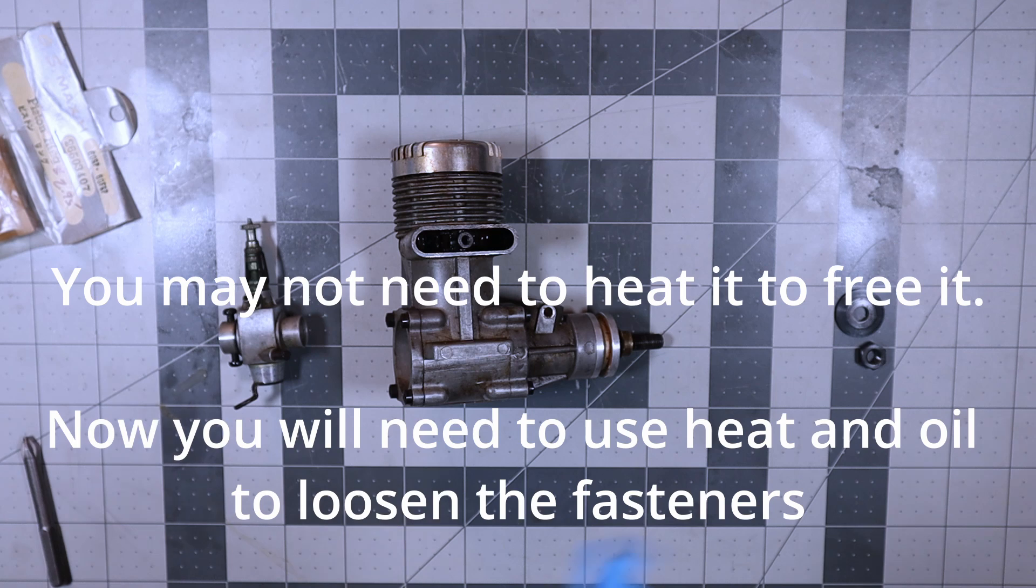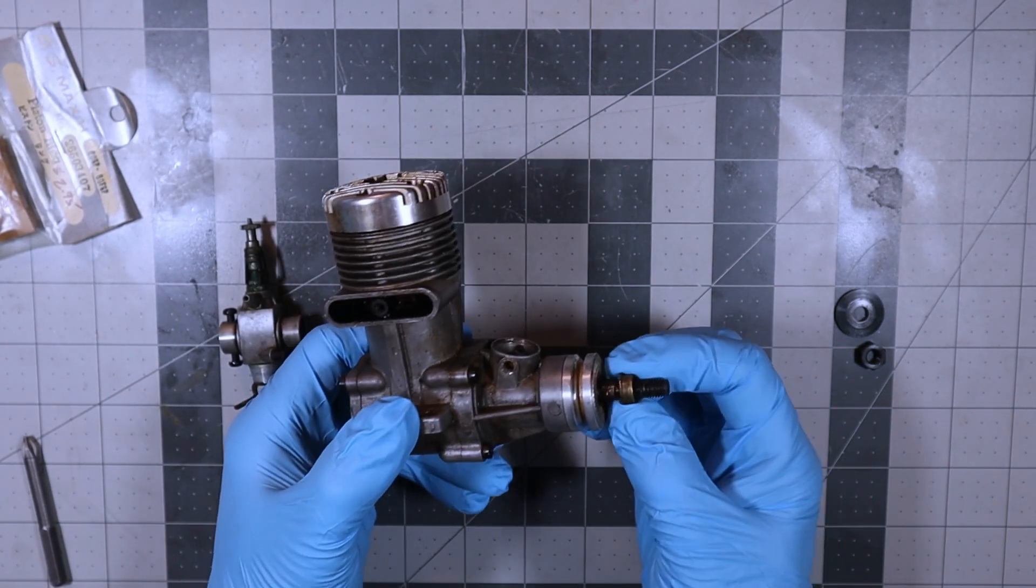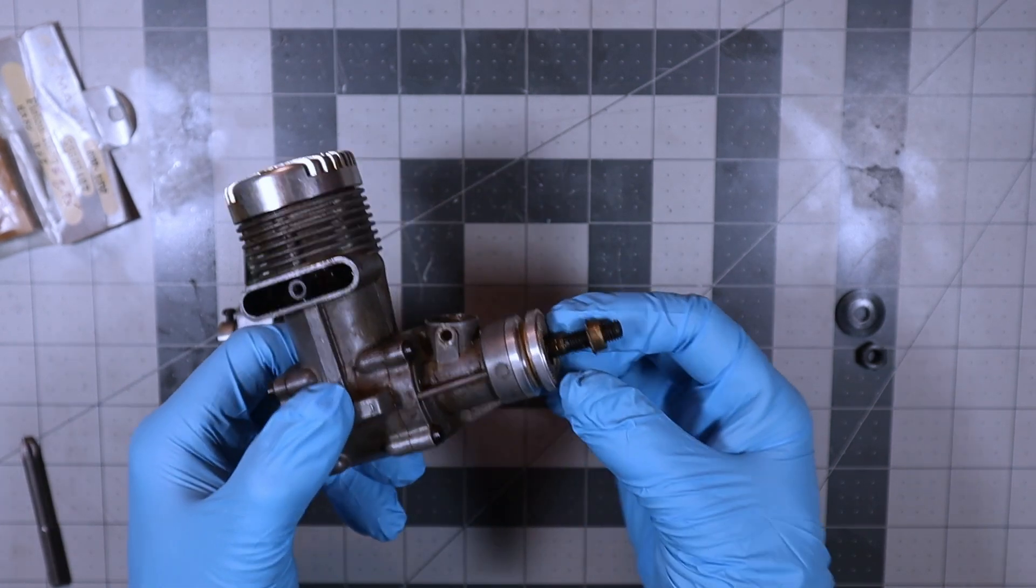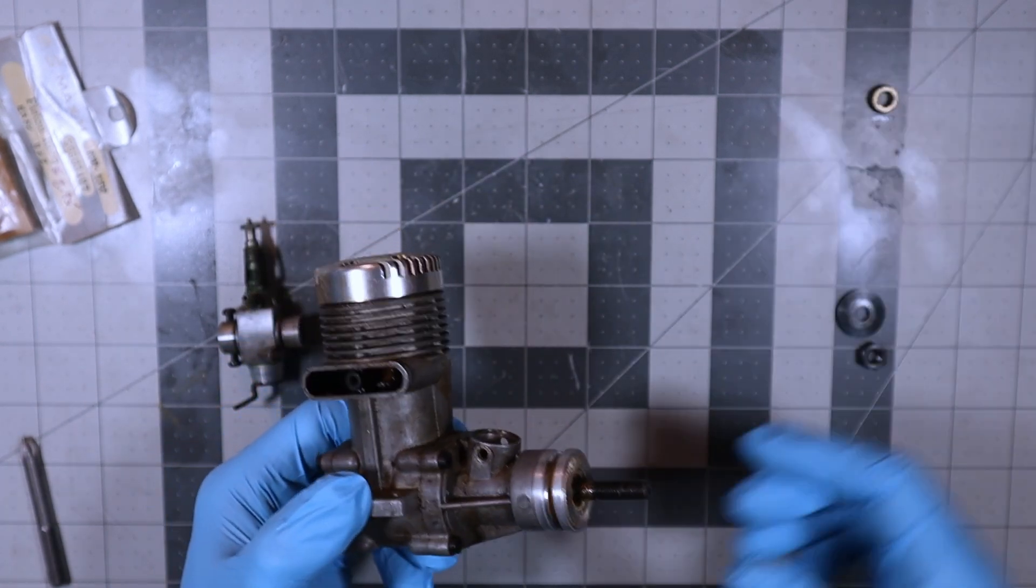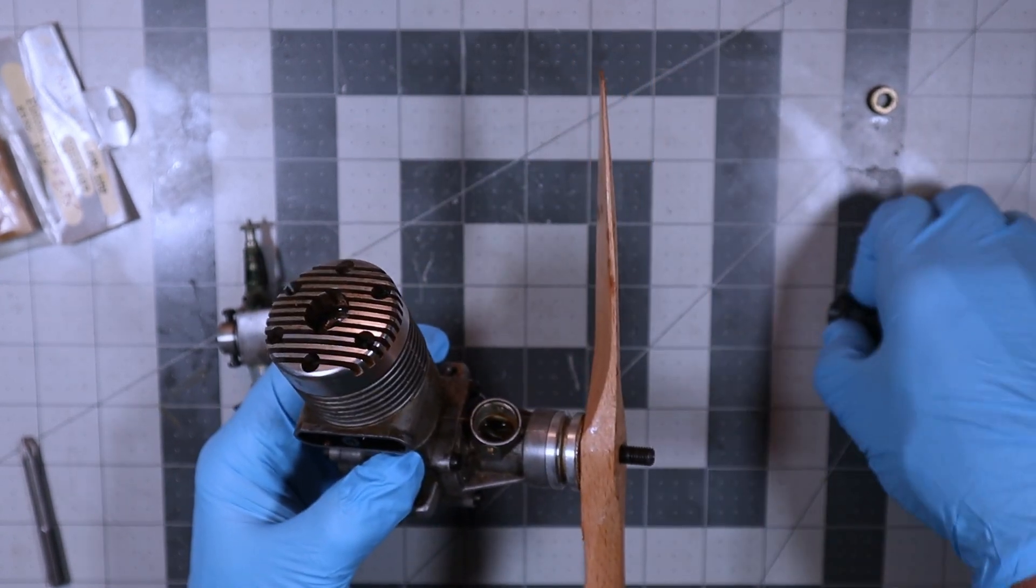Now the one thing I did have to do while I was sitting there letting that 3-in-1 oil soak in there was there was this brass something, it looked like from a spinner on there, so I had to get that thing off because that doesn't belong on there. So I'm gonna put this prop on here.